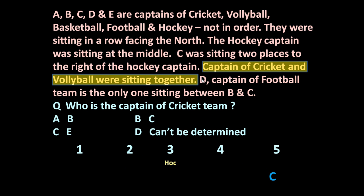The next statement: D is the captain of the football team and is the only one sitting between B and C. C is at position 5, so obviously D will be at position 4 and B will be at position 2, with D being the captain of the football team. All other statements are now taken care of — only the underlined statement about cricket and volleyball is left.